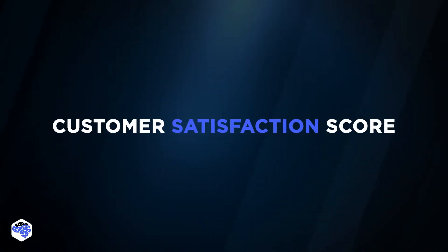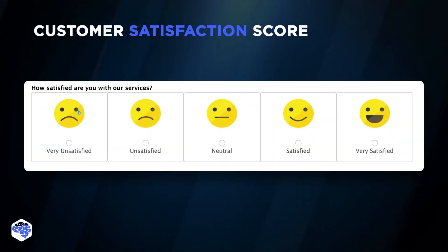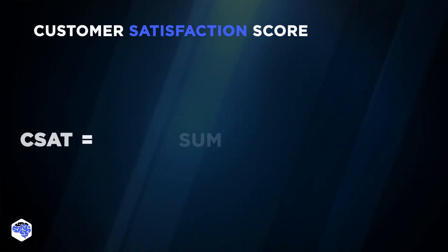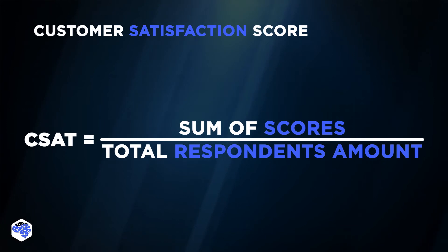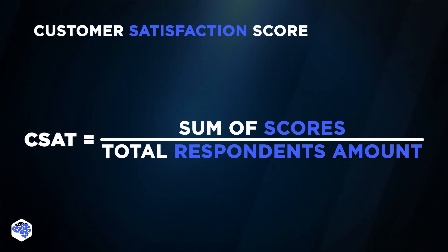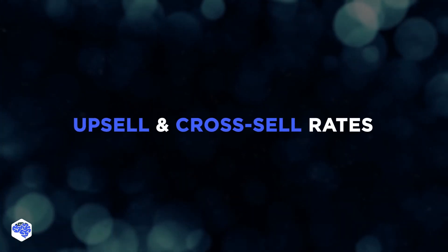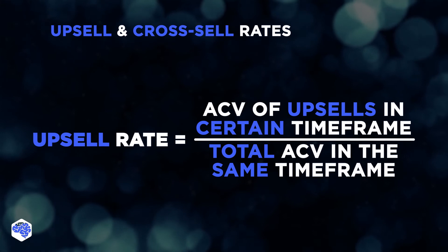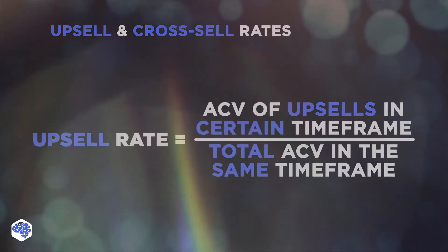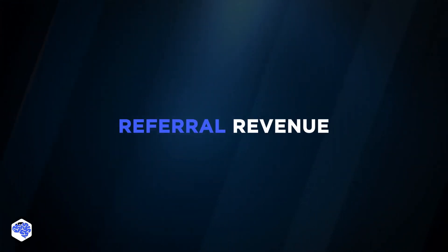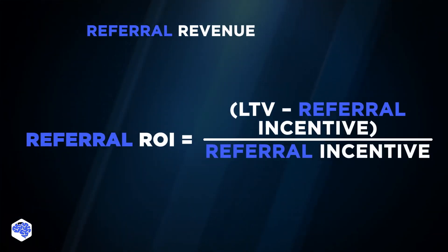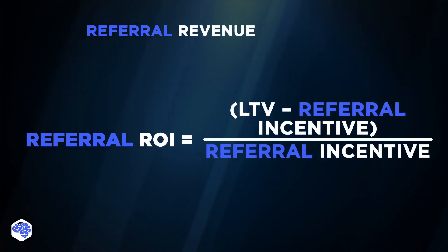Another important metric is Customer Satisfaction Score, used to get users' thoughts about particular features of the product. To count CSAT, users are asked to rate the product and its features on a scale such as 1–3, 0–7, or 1–10. Upsell and cross-sell rates are used to calculate how well existing customers are upgrading their accounts or buying additional services or features. Referral Revenue is total income from successful customer referrals over a period, and should be compared to investments in the referral program.